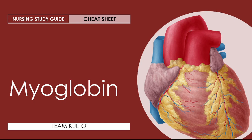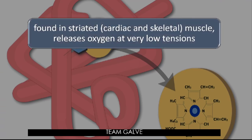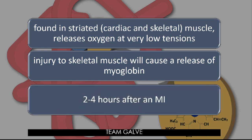We're done with CK. Now let's proceed to myoglobin. Myoglobin is an oxygen-binding protein found in striated cardiac and skeletal muscle that releases oxygen at very low tensions. Any injury to skeletal muscle will cause a release of myoglobin into the blood. Myoglobin rises in 2 to 4 hours after an MI, making it an early marker for determining cardiac damage.